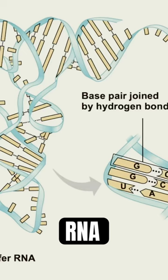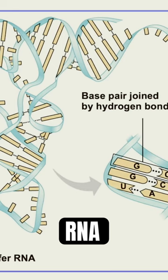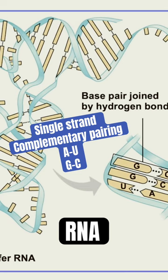In image B, we see a special type of RNA called a transfer RNA or tRNA. This is a single strand of RNA that's just folded up on itself due to complementary base pairs within itself.